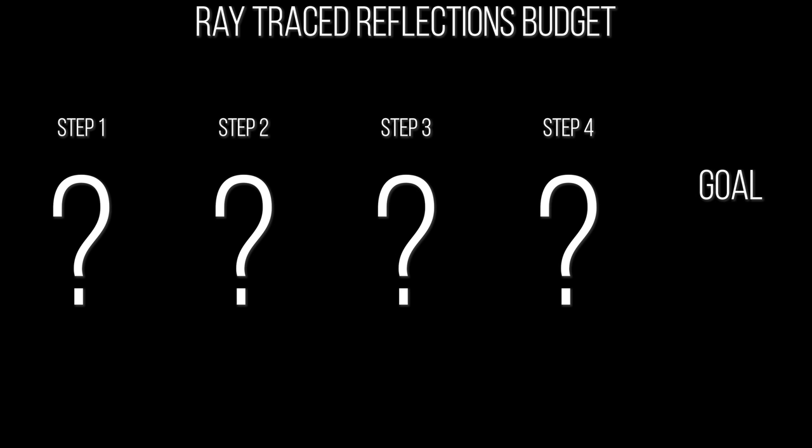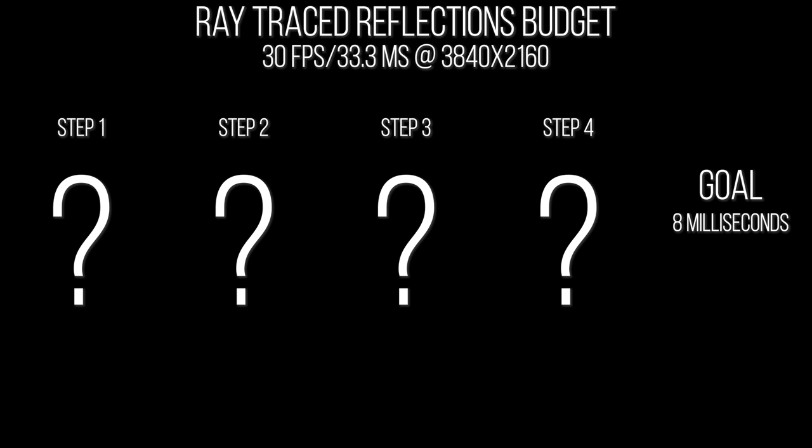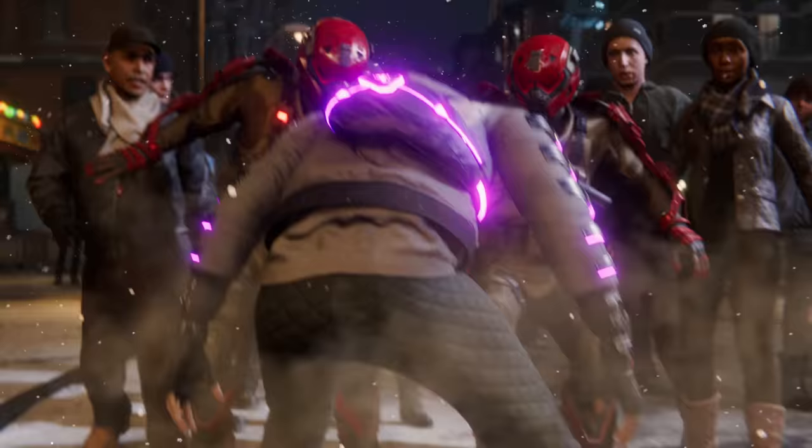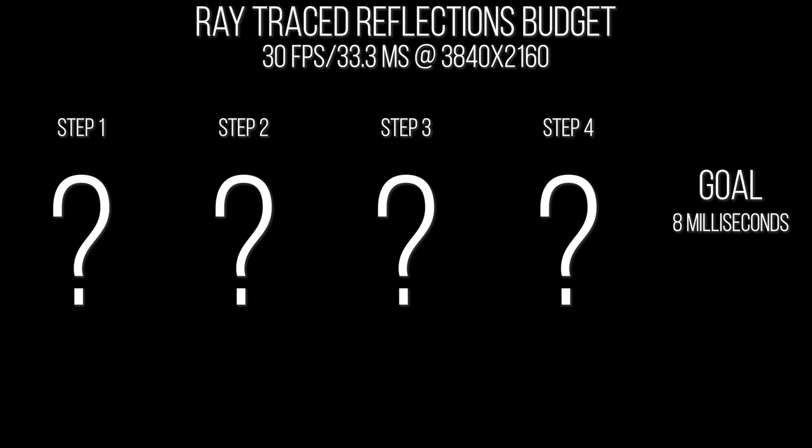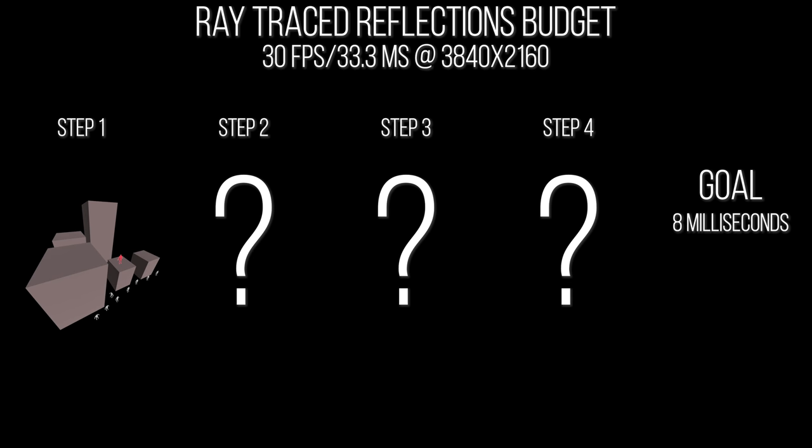Developers have a limited performance budget for ray tracing in the game, so let's think of it like we were developers managing our own ray traced reflections. Here we have four steps that make up ray traced reflections, and a budget for it — let's say eight milliseconds for reflections for a 30 fps game at 4K, about 24% of the 33 milliseconds it takes to make one frame. Step one is where the GPU makes an easily readable version of the game scene to trace against later. The more objects in here, and the more dynamic those objects are, the more milliseconds this step will take.